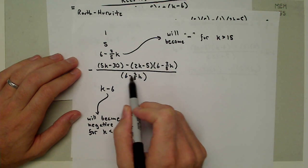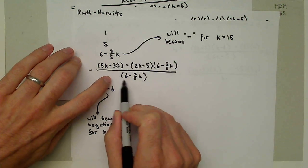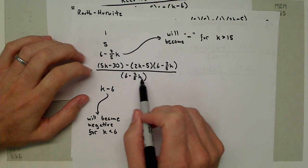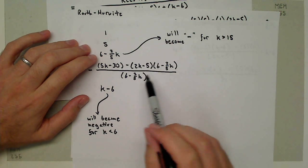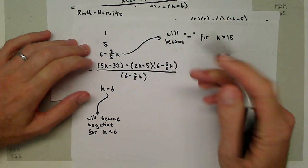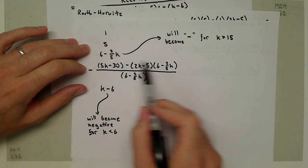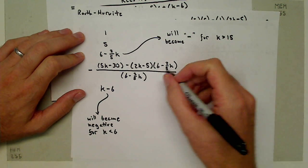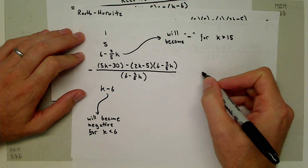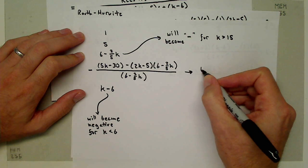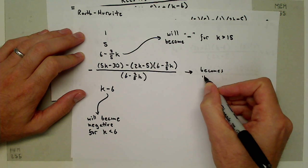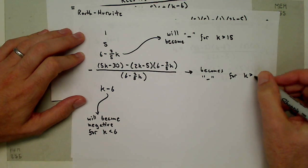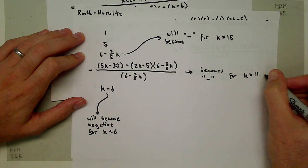We don't actually need to consider the bottom. The entire system is going to go negative when this actual term goes negative, when the numerator goes negative. We just want to know when the numerator crosses zero. We can show, just by plotting this out, that it becomes negative for K greater than around 11.3.